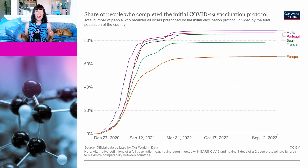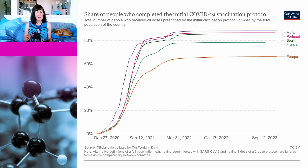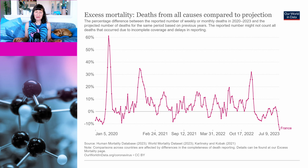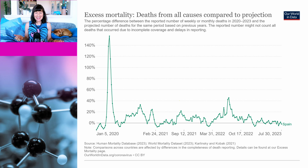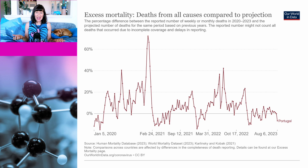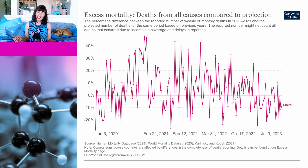But what about if we look at some of the highly vaccinated countries that he hasn't included in his list? For instance, Spain, France, Malta, and Portugal all have high vaccination rates which are above the European average. What does their excess mortality look like now? If we look at France in 2023, excess mortality is primarily negative. In Spain, excess mortality is hovering around the zero mark. Same for Portugal. And finally Malta, hovering up and down around the zero mark for the whole of the pandemic.